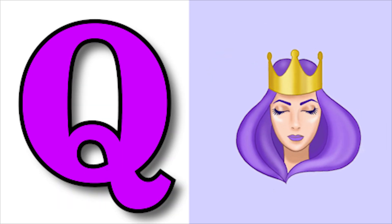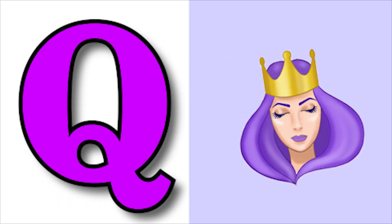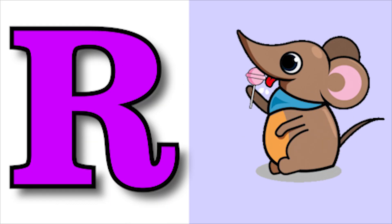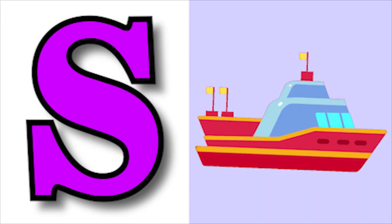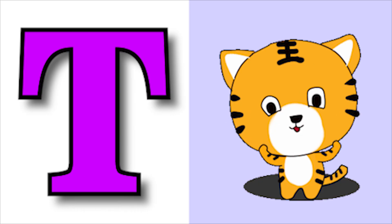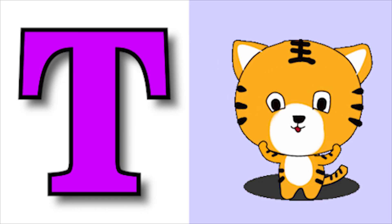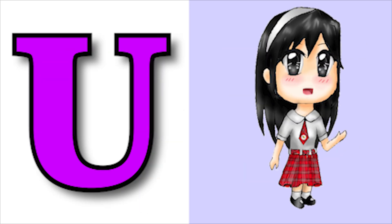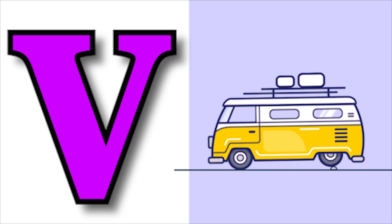Q for queen, R for rat, S for sheep, D for tiger, U for uniform, B for van.